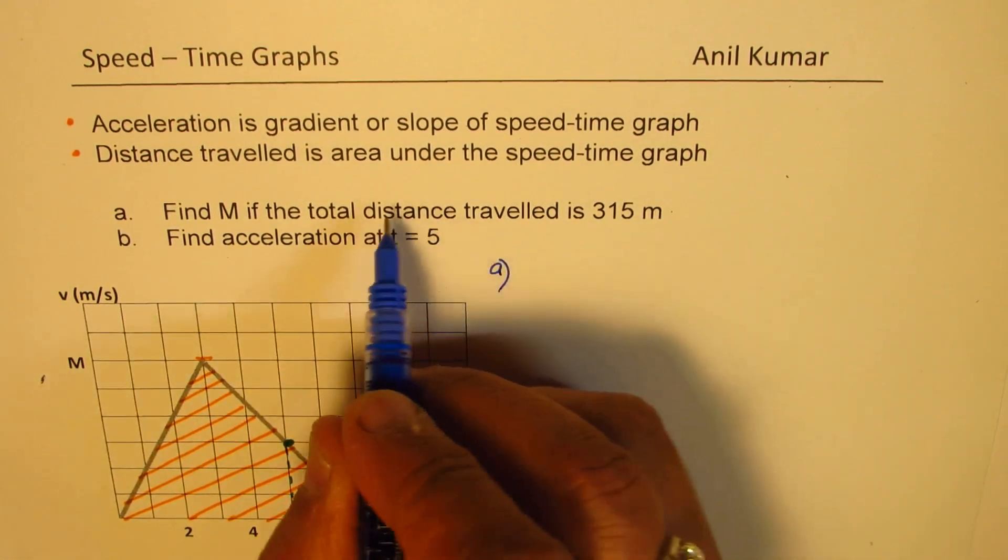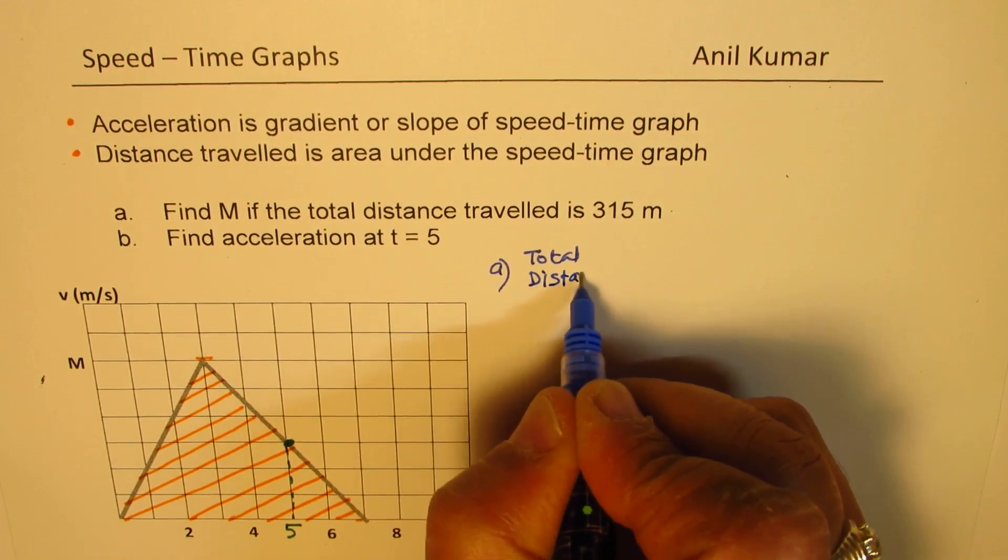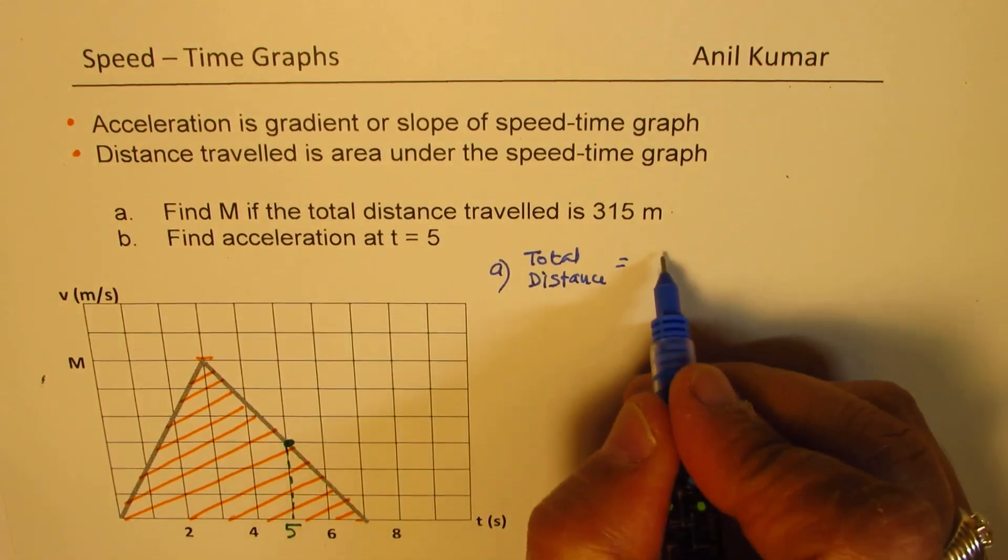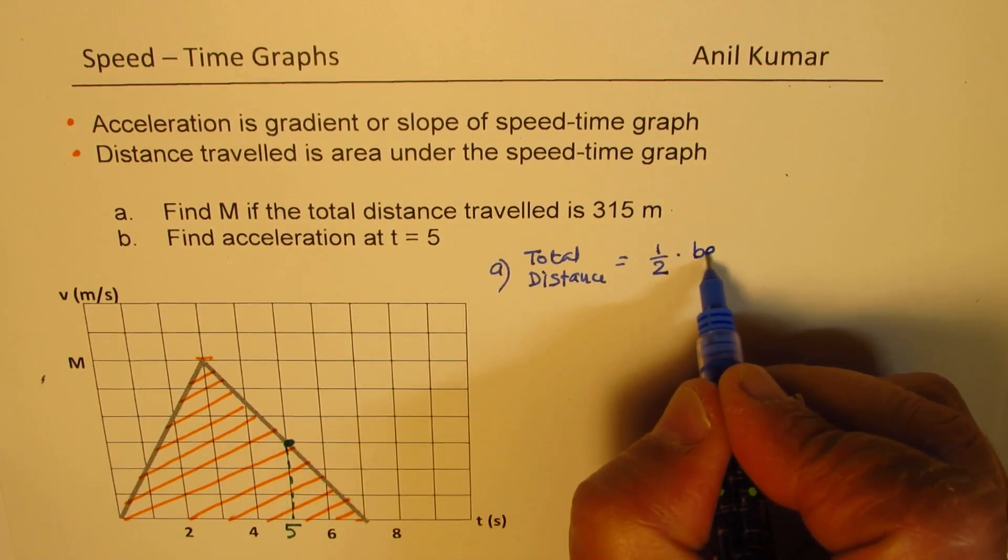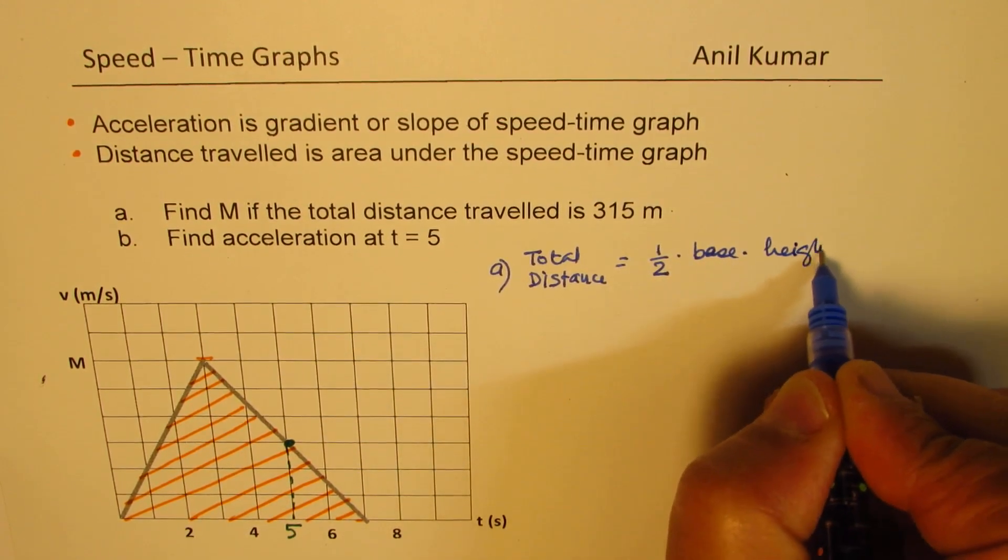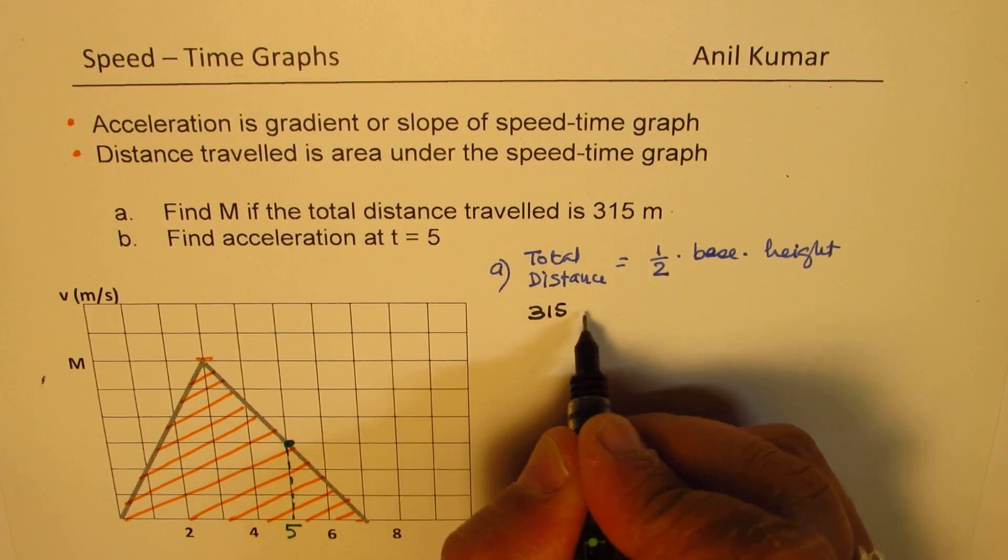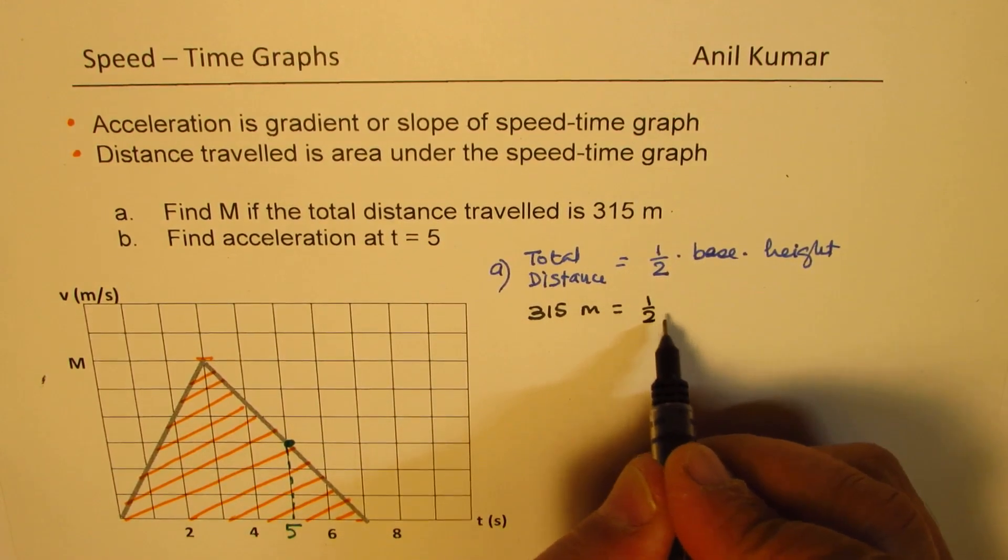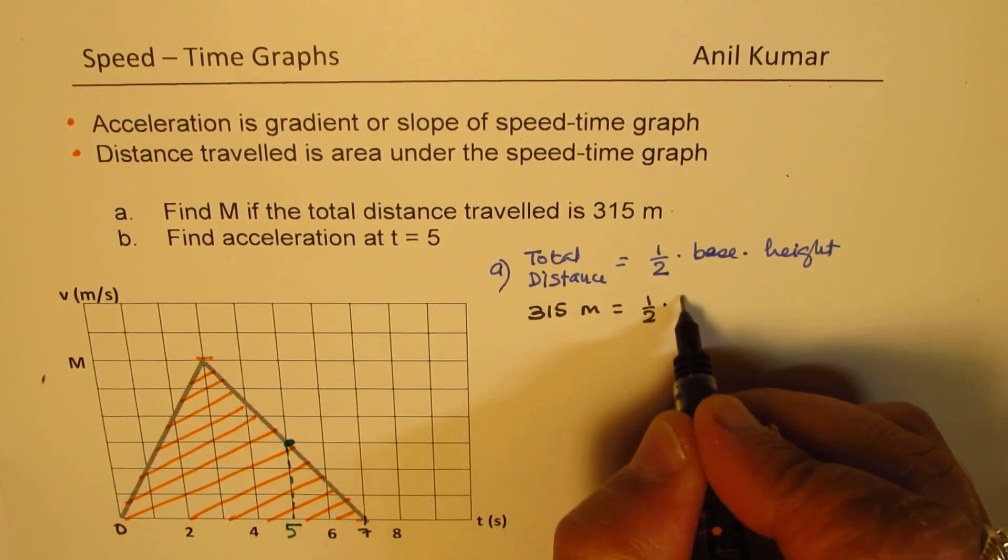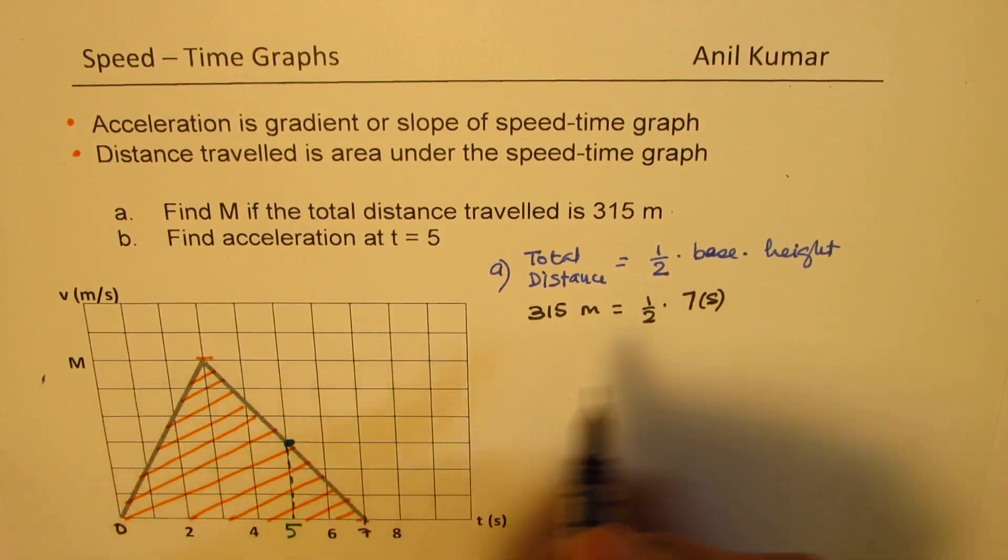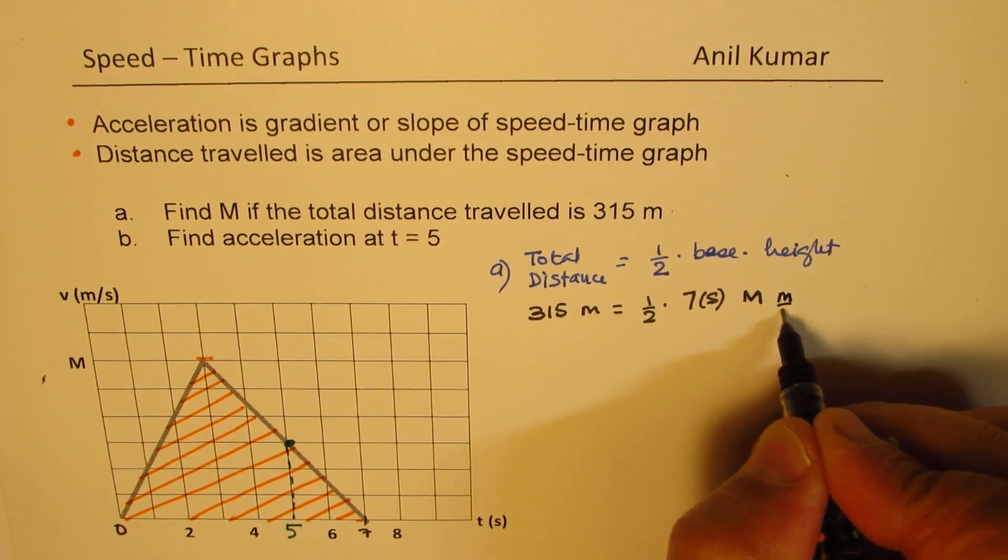So let's begin with part A, where we have to find total distance. So total distance, as you know, is area under the curve. This is a triangle. So the area under the curve is half of base times height. But we are given the distance, which is 315 meters. And as far as the base is concerned, so this is 7. So it is 7 seconds from 0 to 7. As far as height is concerned, it is m, and it is in meters per second.